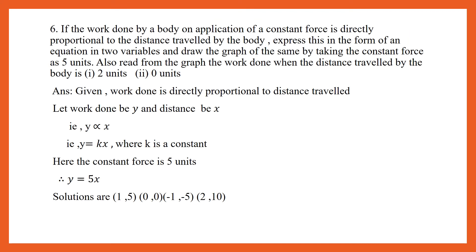If the work done by a body on application of a constant force is directly proportional to the distance travelled by the body, express this in the form of an equation in two variables. It is given that work done is directly proportional to the distance travelled. Let us take the work done as the variable y and the distance as the variable x. So we can write y is directly proportional to x. To remove the proportional symbol, we write y is equal to kx, where k is the constant force applied. Since the constant force is 5 units, our equation will be y is equal to 5x.